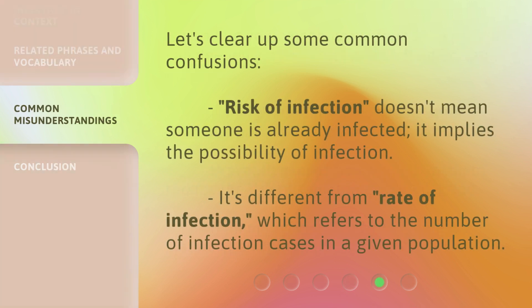Let's clear up some common confusions. Risk of infection doesn't mean someone is already infected — it implies the possibility of infection. It's also different from rate of infection, which refers to the number of infection cases in a given population.